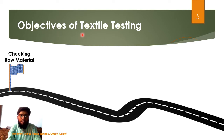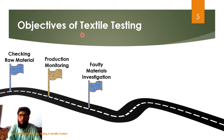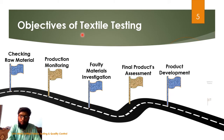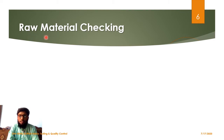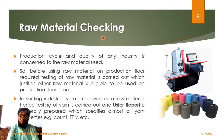Here are some objectives of textile testing. The first one is checking raw material, then production monitoring, faulty material investigation, final product assessment, product development, and research purposes. Regarding raw material checking: it has been said that the production cycle and production quality of an industry is totally dependent on its raw material.